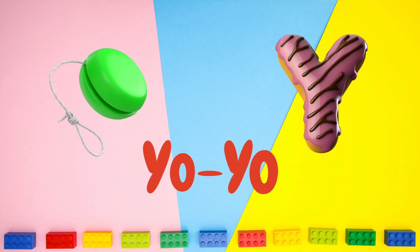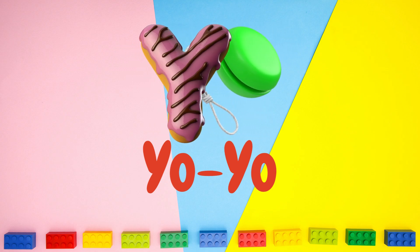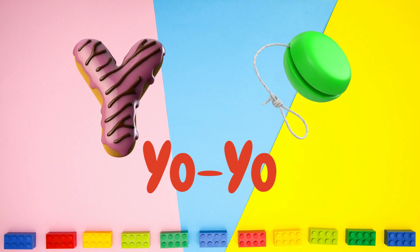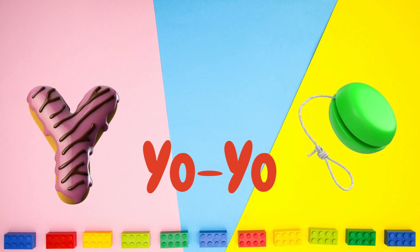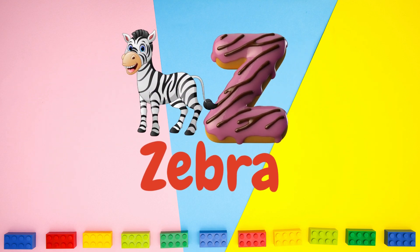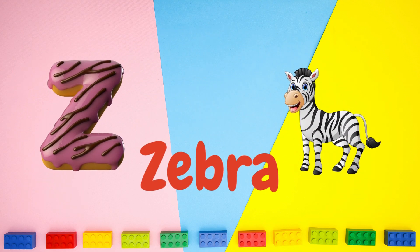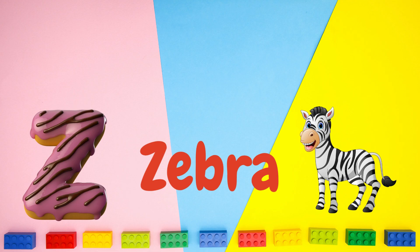Y is for yo-yo. O-o-o-o — yo-yo. Z is for zebra. Z-z-z-z-zebra.